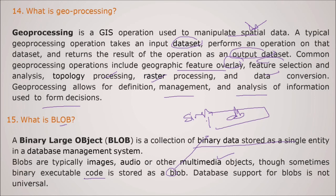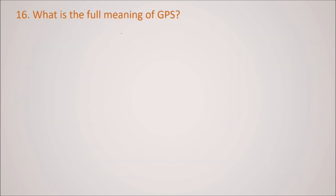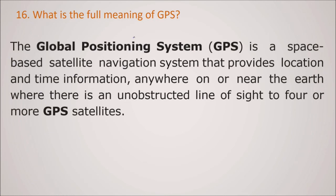What is full meaning of GPS, Global Positioning System? It is a space-based satellite navigation system that provides a location and time information anywhere on or near the Earth where there is an unobstructed line of sight to four or more GPS satellites.